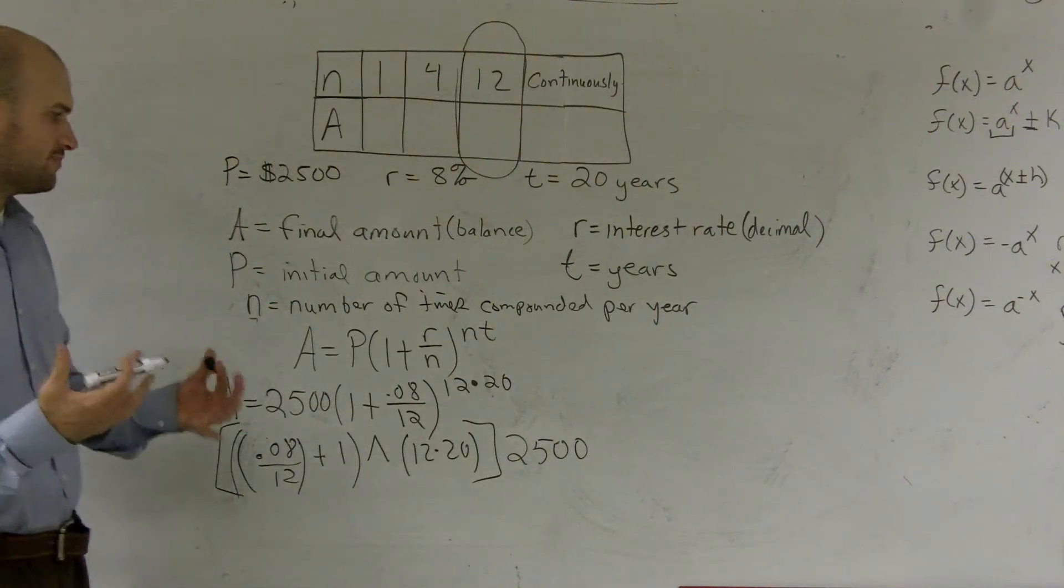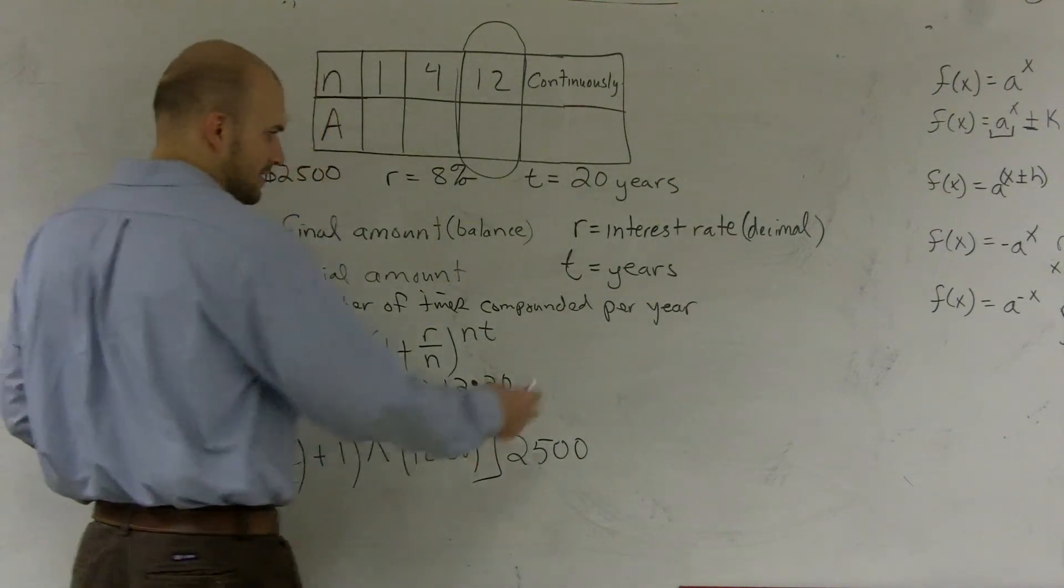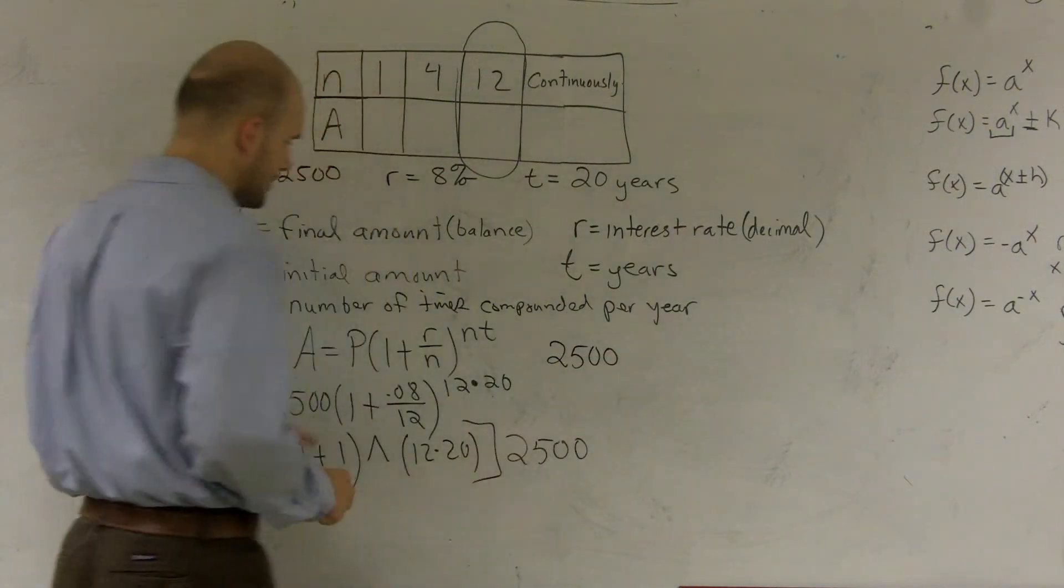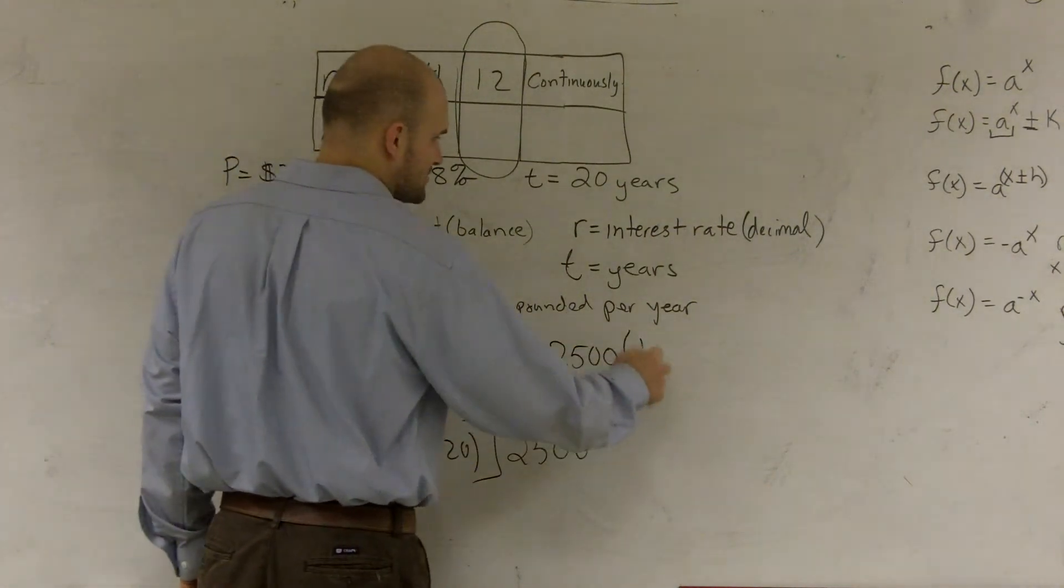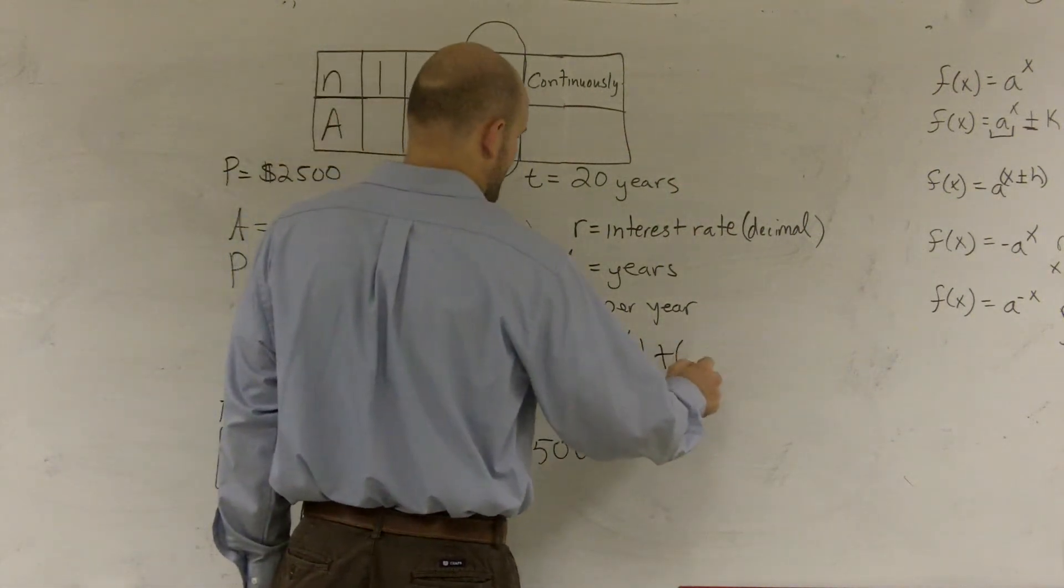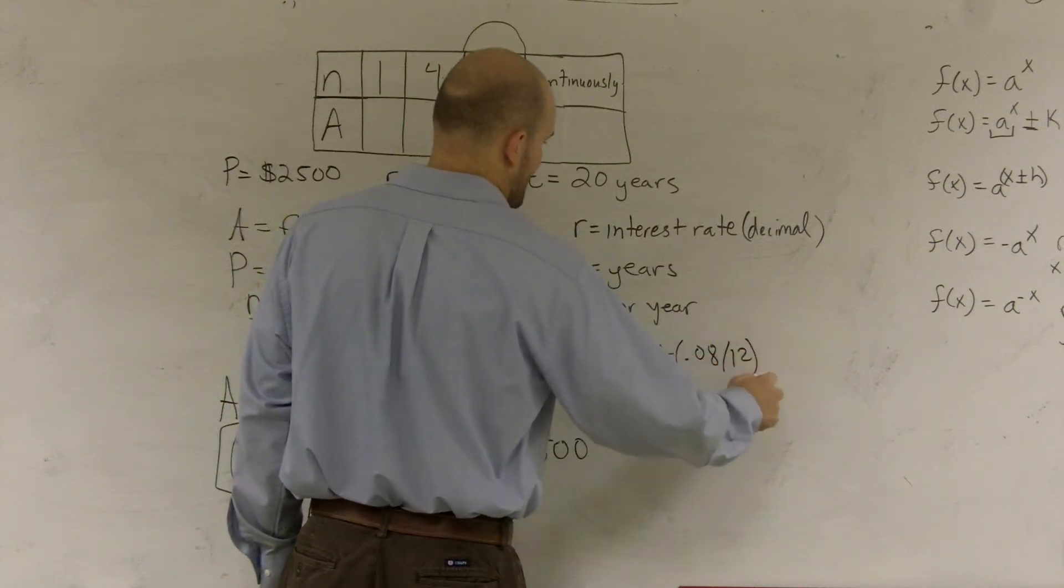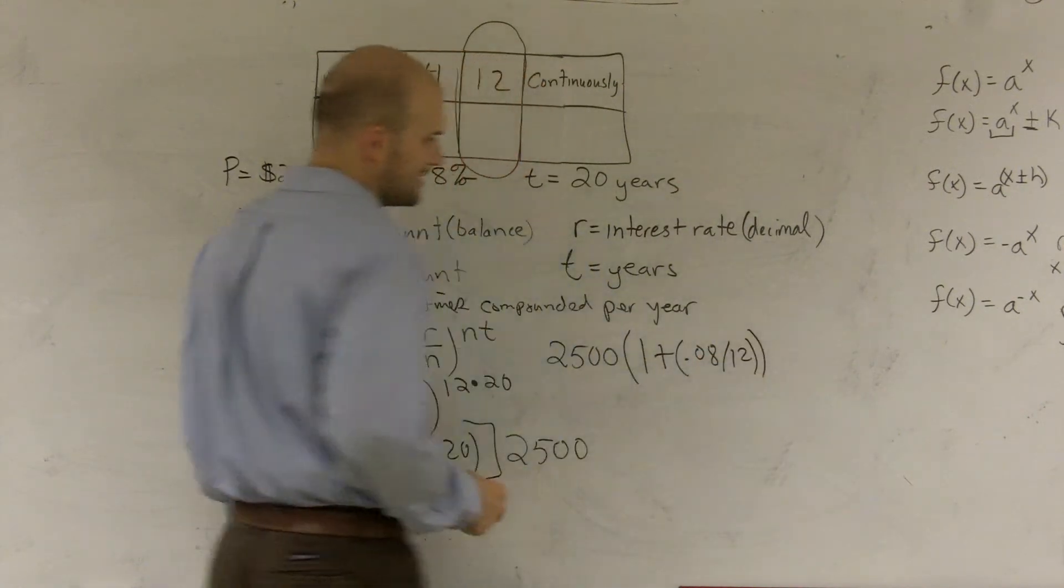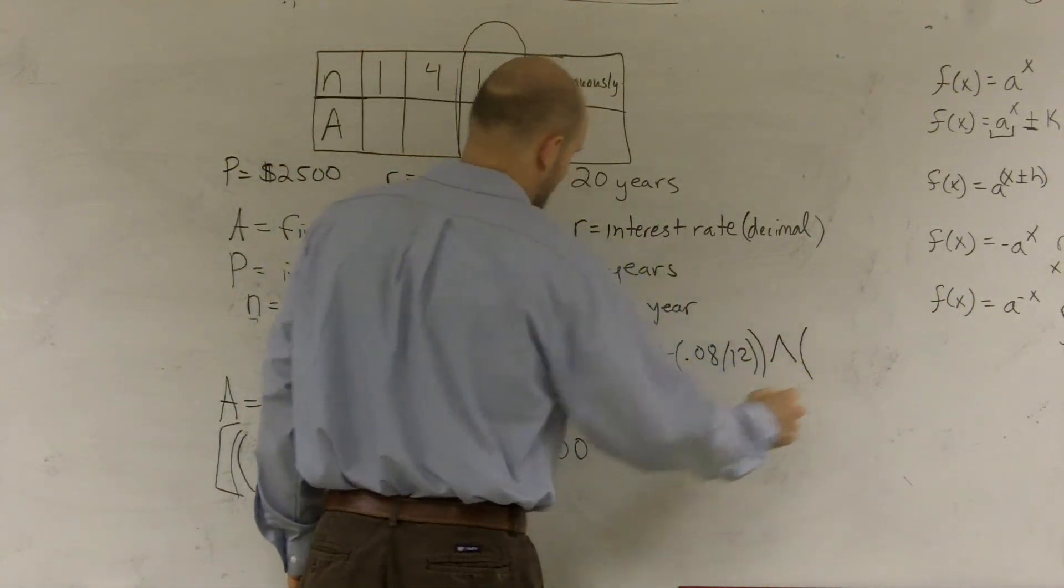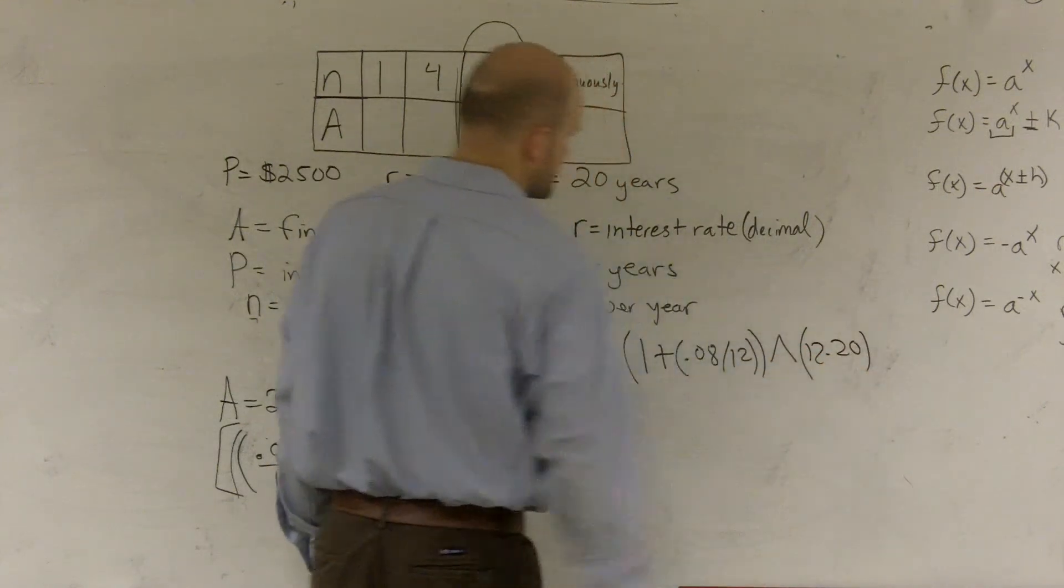The same exact thing goes, if you're going to plug this in your calculator, here's how I plug it in. I plug in 2,500, all right, times parentheses 1 plus, again, make sure you're using parentheses again, parentheses 0.08 divided by 12, end parentheses, end parentheses again for this, raise it to your, again, parentheses 12 times 20. End parentheses.